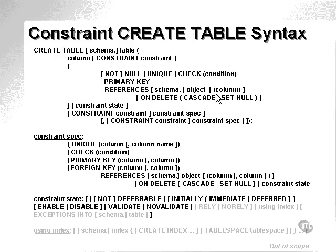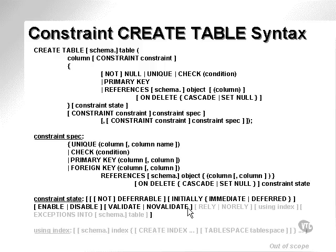Note the ON DELETE CASCADE or SET NULL options. What this implies is that when a primary key record is deleted, it can delete the foreign key records by cascading downwards, or it can set values to null. You can also set the constraint state to various values. The ones that are really important at this stage are ENABLE and DISABLE — disable meaning the constraint is not functioning. Slightly less important are VALIDATE and NO VALIDATE. VALIDATE means to validate the constraint on the existing data already in the table. NO VALIDATE means do not apply the constraint to existing data, but apply it to newly inserted data only.